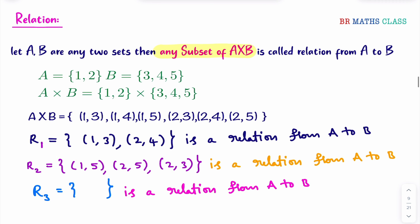For example, 'R is a relation on Z' means R is a relation from Z to Z. 'R is a relation on N' means R is a relation from the natural numbers N to N. These things you already learned in class 11th. In the next class, we will learn types of relations which are very important in this chapter.